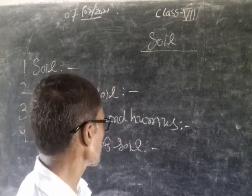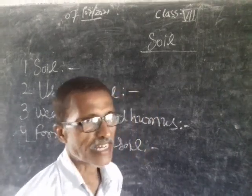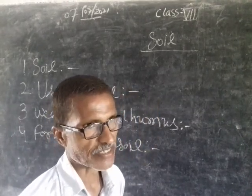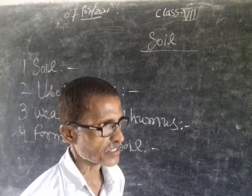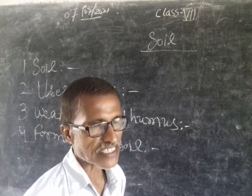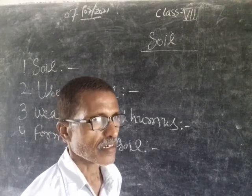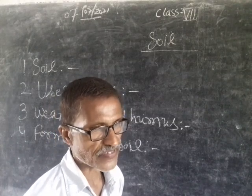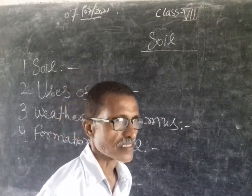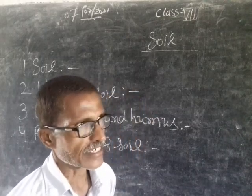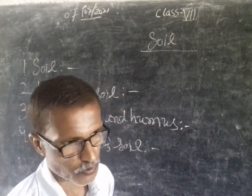Now, Humus. Humus is a black colored organic substance which is formed by dead plants and animals. Dead plants and animals are decomposed by organisms such as bacteria, fungi, etc., due to which humus is formed. Humus is an essential component of Soil because it makes the Soil fertile.